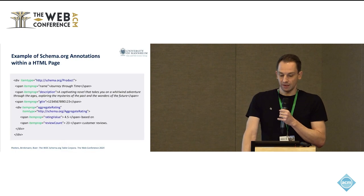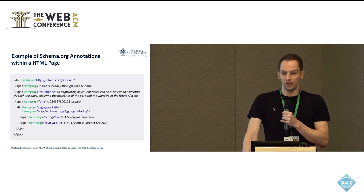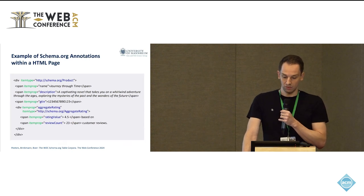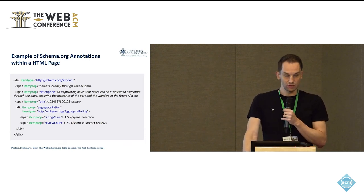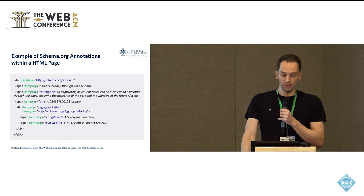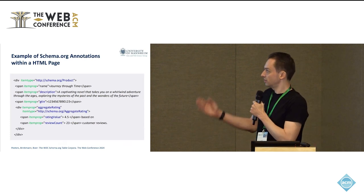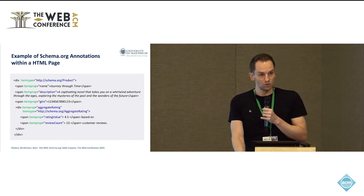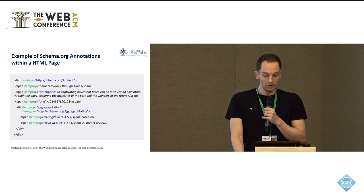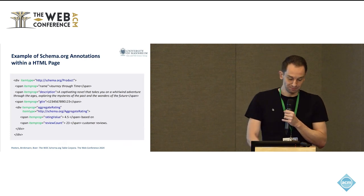Here is an example of what such a schema.org annotation in an HTML page can look like. We have something called a schema.org Product — an entity of type product that is marked up — which then has several different attributes like the name, a description, a product ID, and also some rating information.